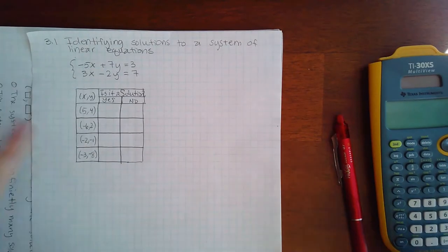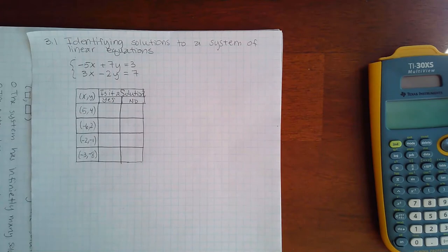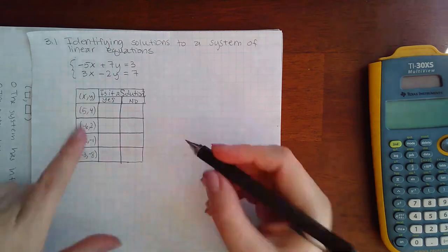Here we have 3.1 identifying solutions to a system of linear equations. In order for a point to be a solution for a system, it has to satisfy both equations, not just one.